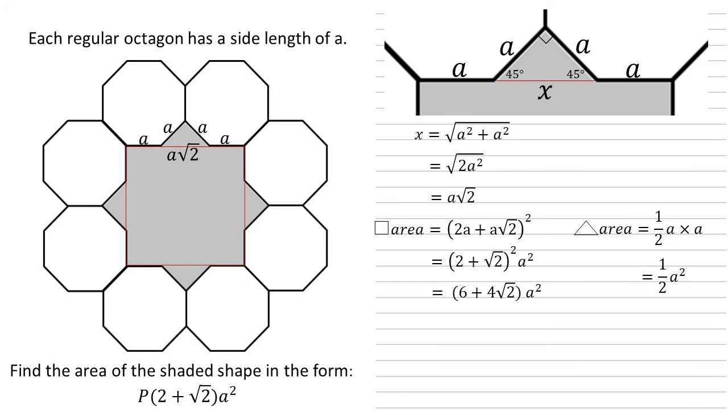The area of our shaded shape is the square plus four of these triangles, so we've got (6 + 4√2)a² plus 4 times ½a². So that last term becomes 2a². We can bring that inside the brackets as they're both multiples of a², which gives us (8 + 4√2)a².